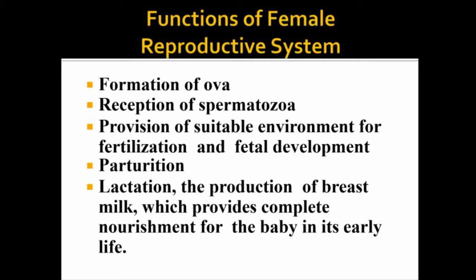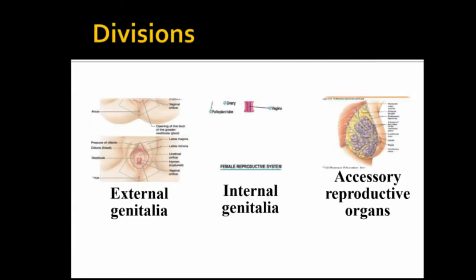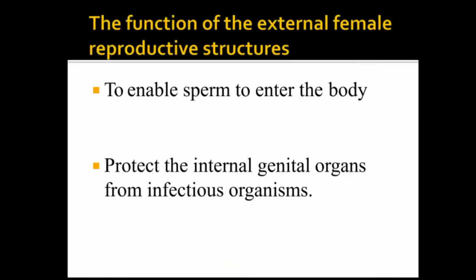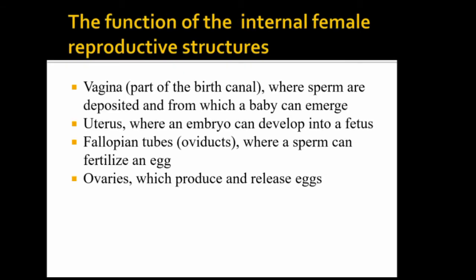The female reproductive system includes external genitalia, internal genitalia, and accessory reproductive organs. The function of external female reproductive structures is to enable sperms to enter the body and protect the internal genital organs. This is the function of internal female reproductive structures.